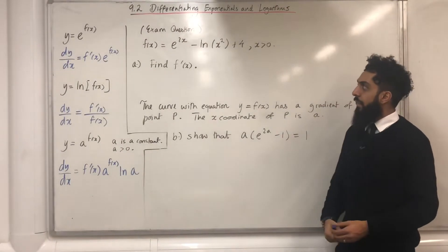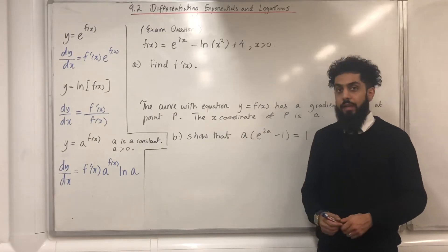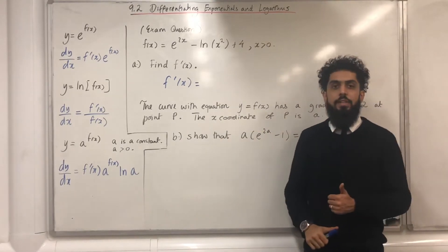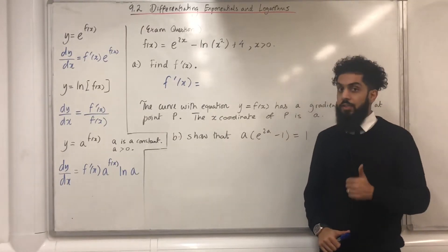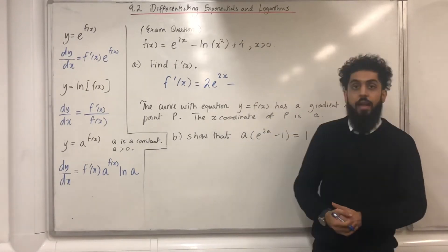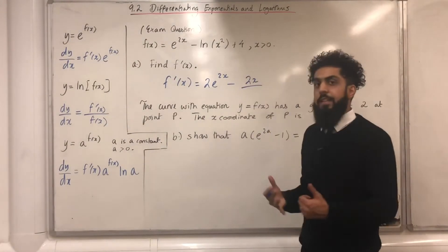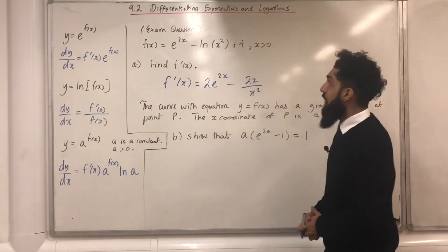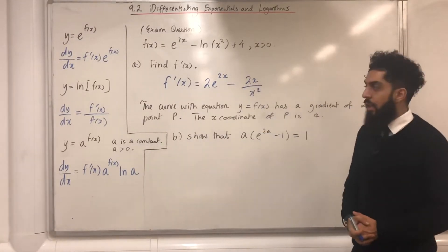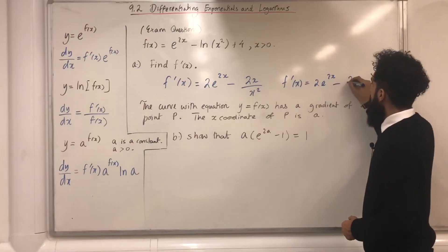Here is an exam question. f(x) = e^(2x) − ln(x²) + 4, where x > 0. Part A: find f'(x). I differentiate the first term e^(2x): the power is 2x, differentiating gives 2, so I get 2e^(2x). Then minus ln(x²): I differentiate x² to get 2x over x². Differentiating the constant 4 gives 0. Simplifying, f'(x) = 2e^(2x) − 2/x.